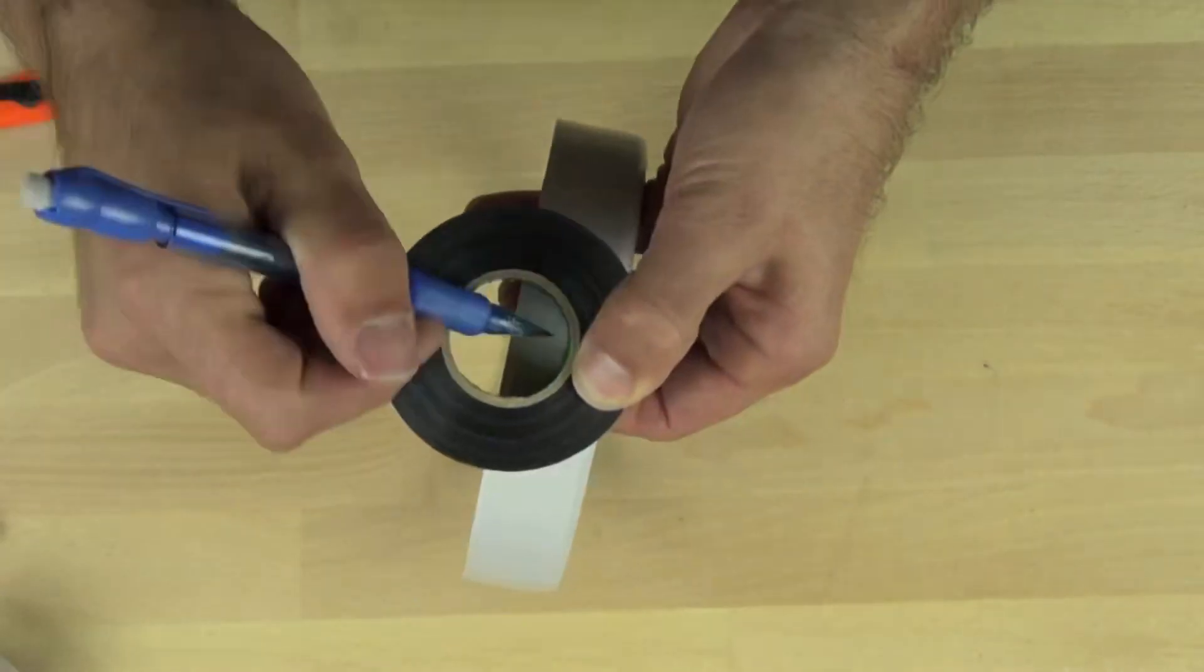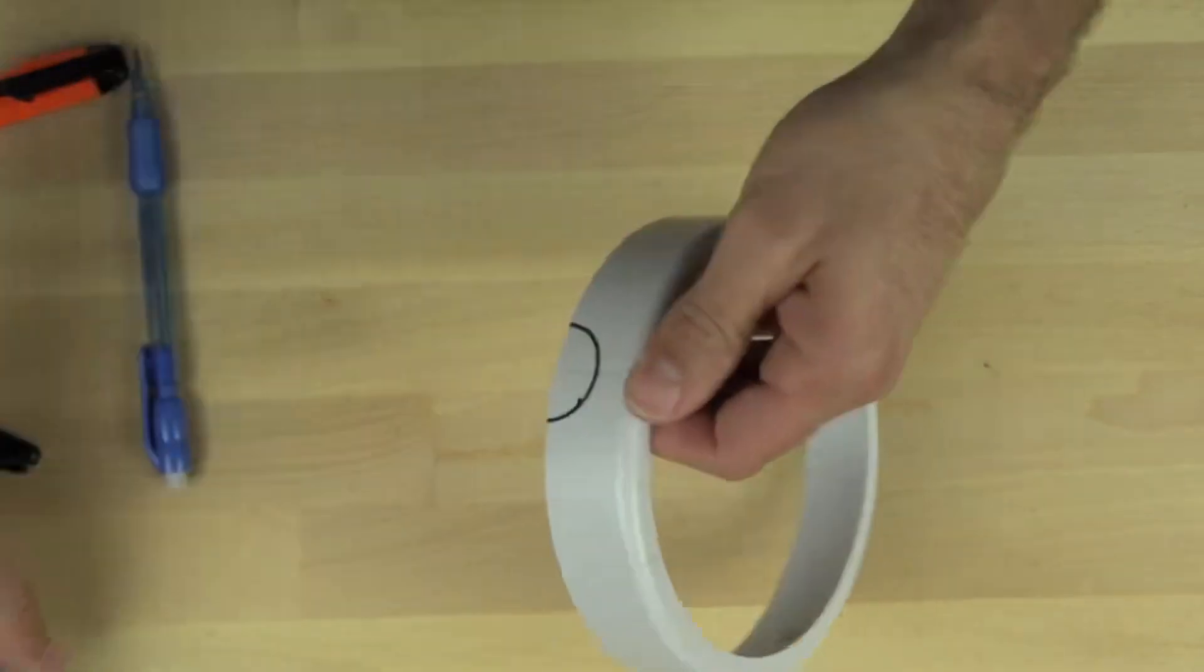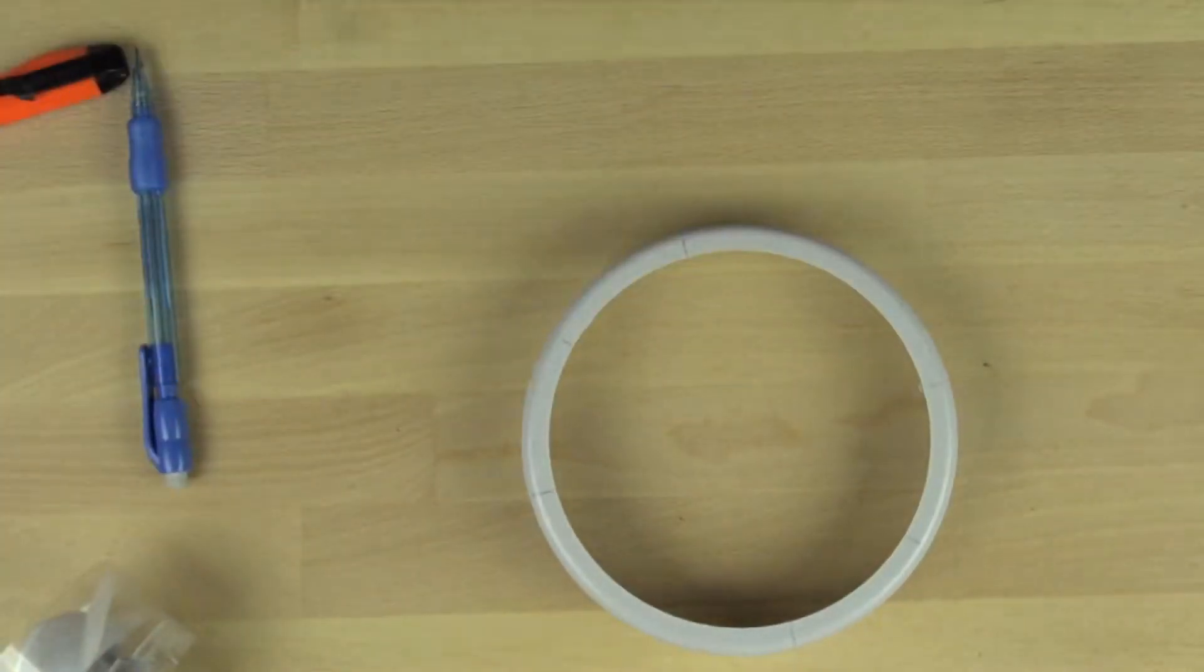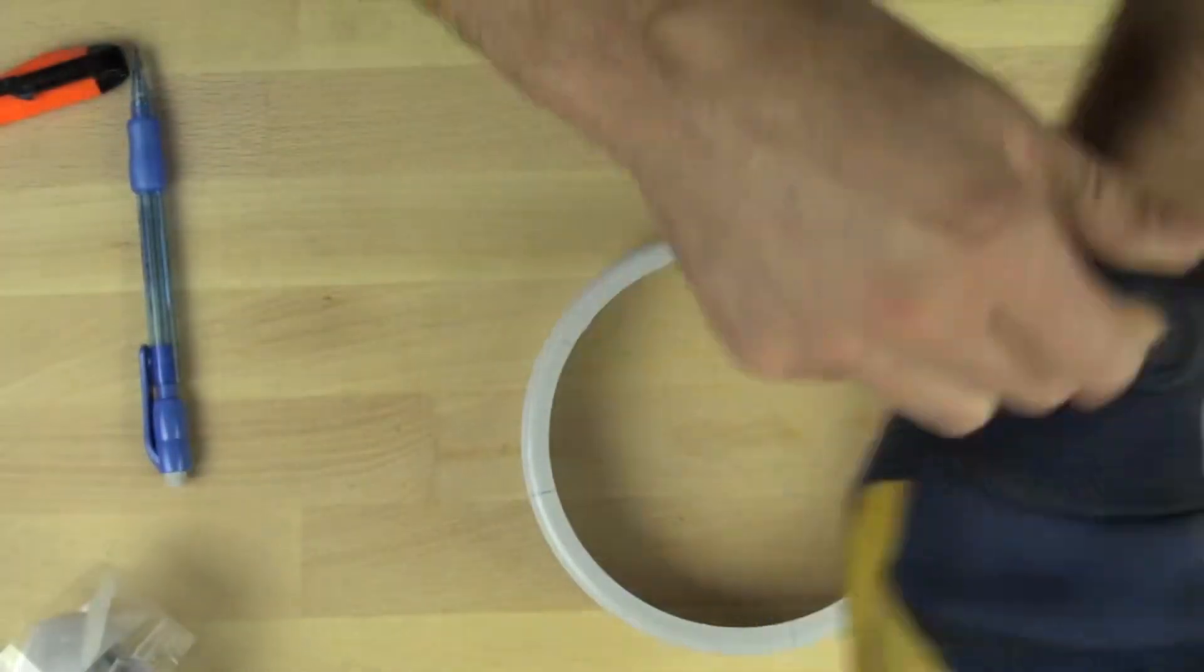We're going to line it up with the mark there and take our sharpie and draw our arc. Once we have our arc drawn, we can begin removing the material that we need to remove so that the motors fit inside of the tap light housing.